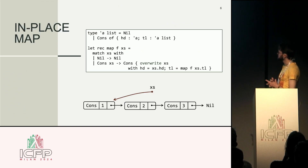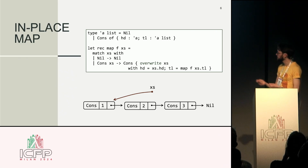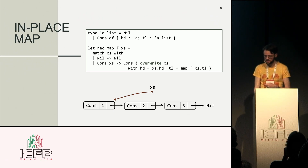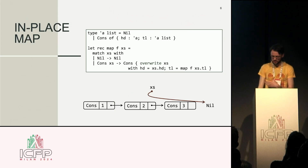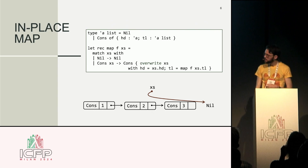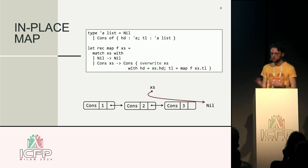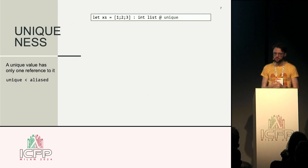Now, how do we do the list map example? The thing we want to achieve is to write a map function where every time we create a new cons cell, we can override the cons cell we already have. So as we map over the list, we change things as we go along — for example, mapping the identity function over list [1, 2, 3] just reuses the same memory. Of course, to make this safe, we don't want to overwrite immutable data that's used somewhere else, so we need a separate mode for uniqueness.